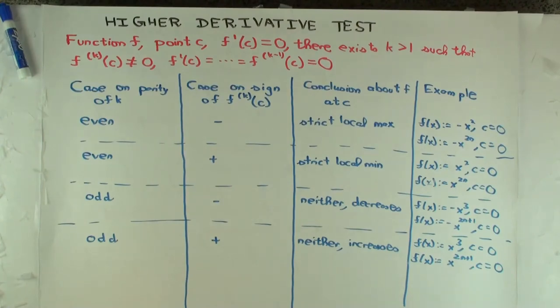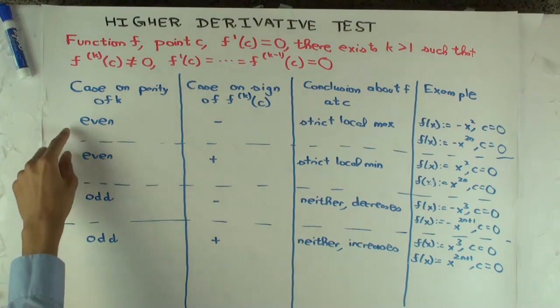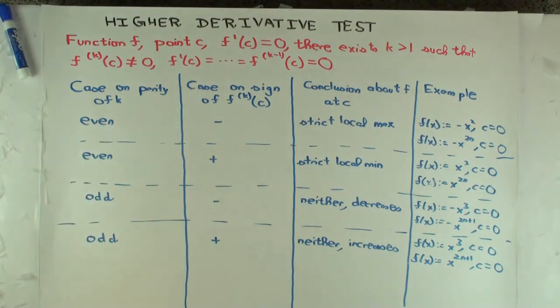So what do you notice overall? If you have the even position where it first becomes non-zero, then you do get a local extreme value. And if the first time it becomes non-zero is at an odd position, then you don't get a local extreme value.